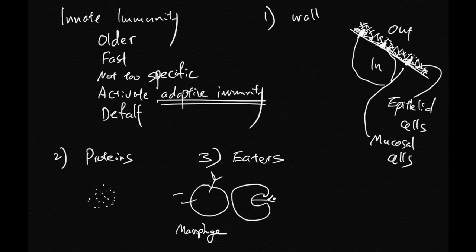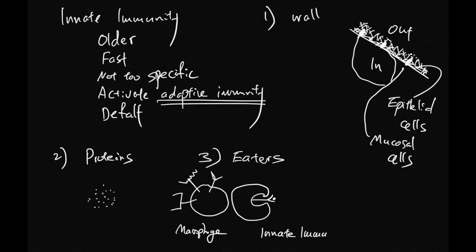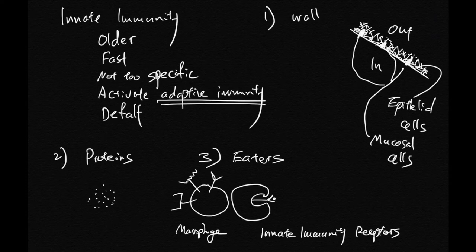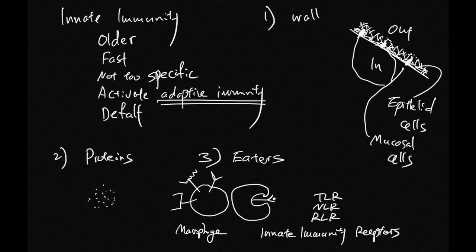And these eating cells have special sets of receptors. Together, I call those receptors the innate immunity receptors. They include things like toll-like receptors, NOD-like receptors, retinoic acid receptors, etc. These receptors can detect pathogen molecules and also damages of your own cells.